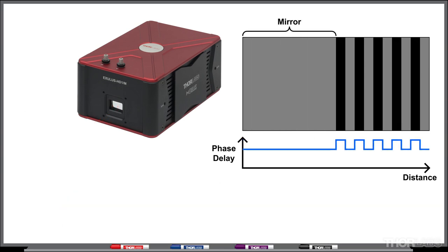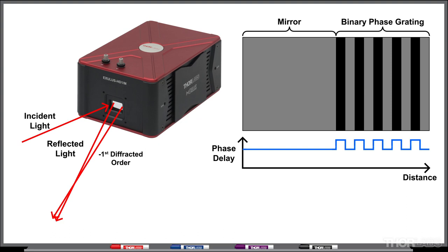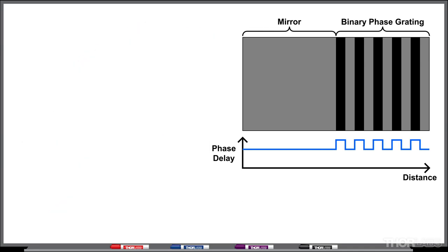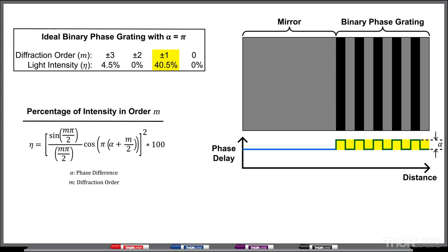The approach I use to calibrate the SLM applies a mirror phase pattern to the pixels on one half and a binary phase grading to the pixels on the other half. The light in the negative orders diffracted from the grading will overlap with the light reflected from the mirror side and form an interference pattern. When the majority of the light diffracted from the grading is in the first order, the interference pattern will consist of periodic fringes. Since these are the fringes I use in my calibration approach, I want to maximize the amount of light in the first diffracted order. The maximum amount of light in the first diffracted order will be achieved when the phase difference is equal to pi.